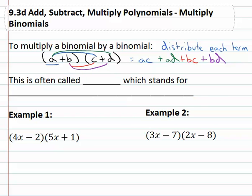This process of distributing the first term through and then the second term through is sometimes called FOIL. The reason it's called FOIL is that stands for first, where I multiplied the first A times the first C. Then the outside, where we multiply the outside numbers, A's on the outside times D on the outside.